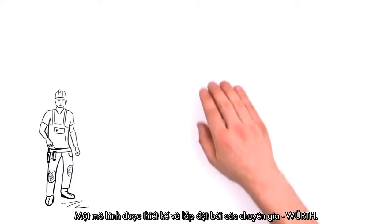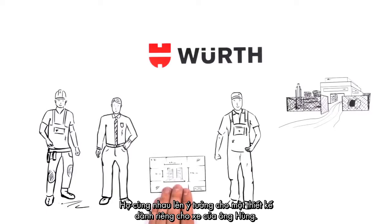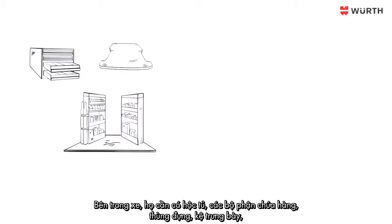Mr. Kunze, the expert of Wurth, visits Mr. Huber in his business. Together, the two of them plan Mr. Huber's individual vehicle equipment. It consists of protective containers for the trunk, drawers, storage boxes, storage racks, an extendable workbench with bench vise and a hose support.